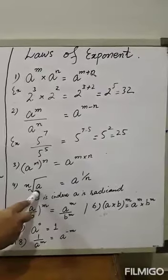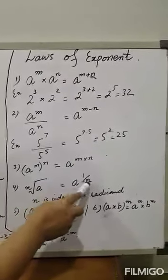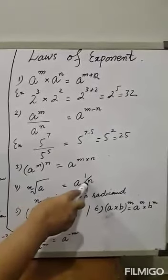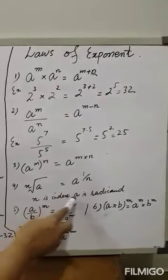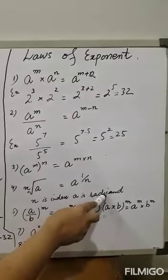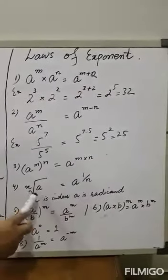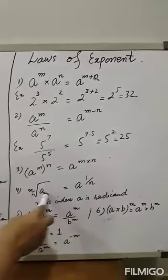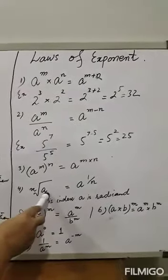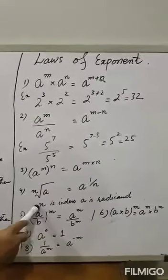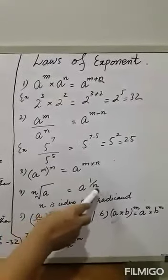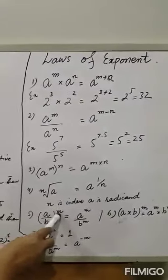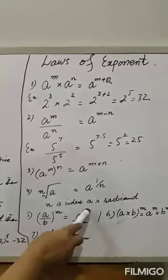The fourth law is: the N-th root of A equals A raised to the power 1/N. Here N is the index and A is the radicand. The fifth law is: (A upon B) whole raised to power M equals A raised to power M divided by B raised to power M.